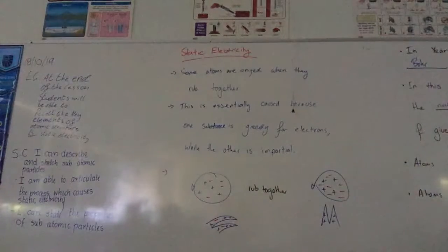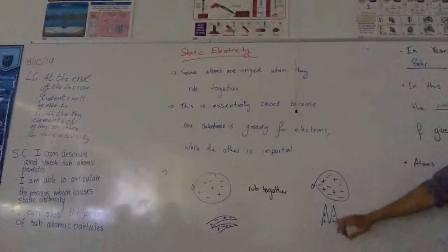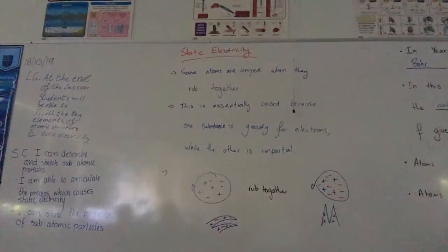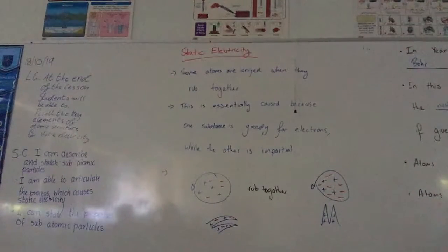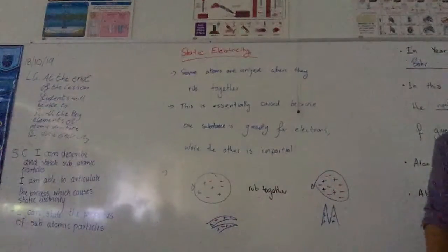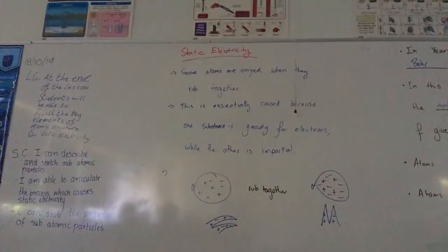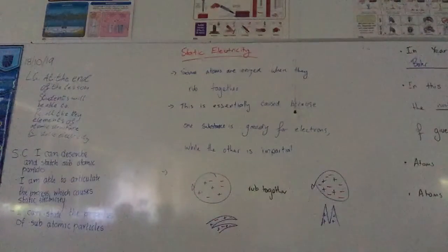What happens to your hair is that it gets a slight positive charge, whilst the balloon gets all those extra electrons. Same number of protons, but all these extra electrons, which means that now it's got a negative charge and your hair has got a positive charge. What do objects with opposite charges want to do? Attract. So they want to come together.